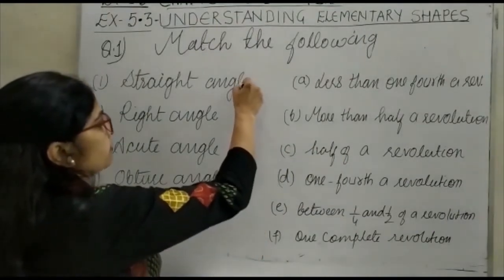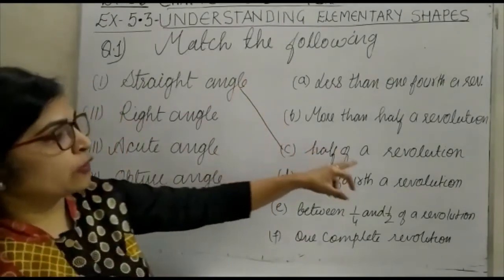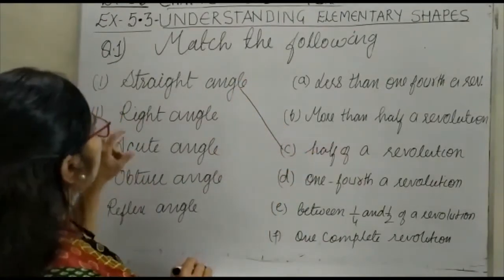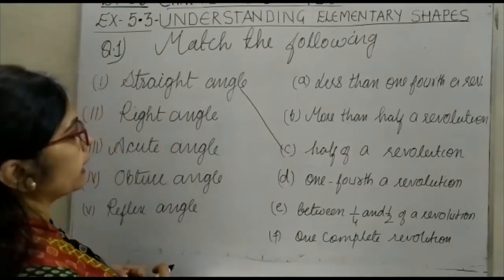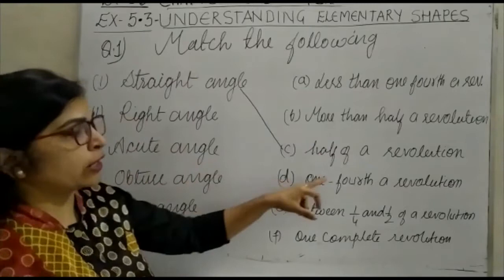Then next, right angle. A right angle is 90 degrees. So 90 degrees means one fourth of a revolution, that is 360 divided by 4. So this is your option D.